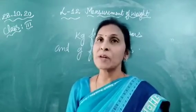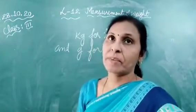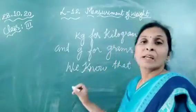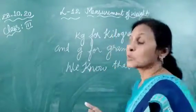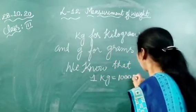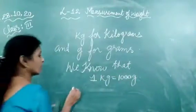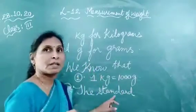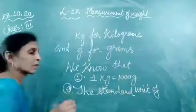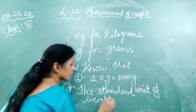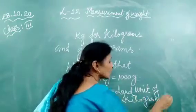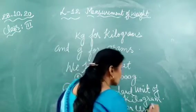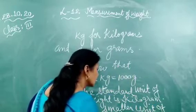In our daily life, we use the word weight instead of mass. We know that one kilogram is equal to 1000 grams, and the standard unit of weight is kilogram. The smaller unit of weight is gram.